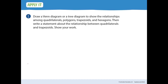Number one at the bottom of page 603. Draw a Venn diagram or a tree diagram to show the relationships among quadrilaterals, polygons, trapezoids, and hexagons. Then write a statement about the relationship between quadrilaterals and trapezoids. Show your work. Please pause the video so you can do the work in your book, and then press play.